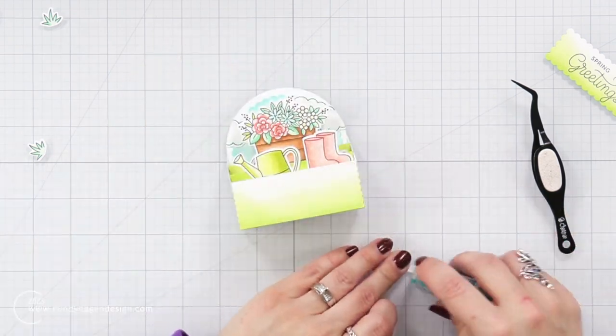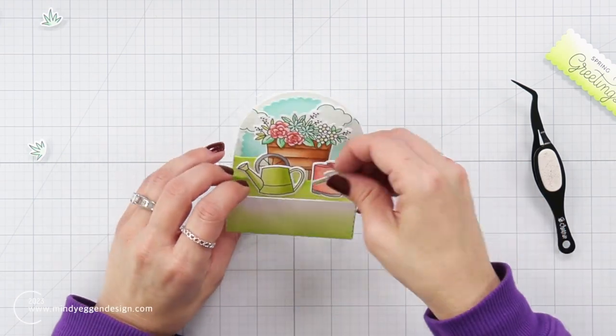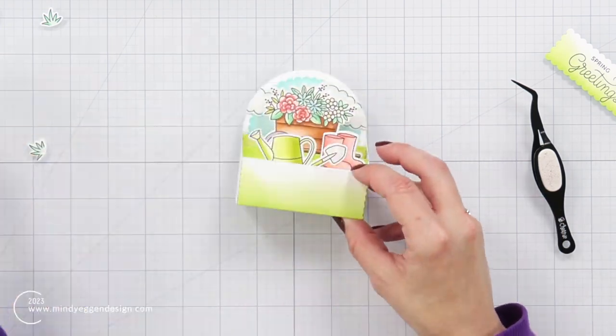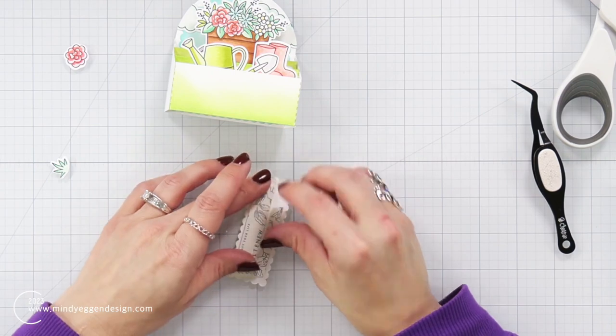Then I'm going to come in and finish with my boots, the watering can, once again just adding adhesive to the very bottom of those. I really don't want adhesive exposed any further than that, otherwise my box won't pop open.